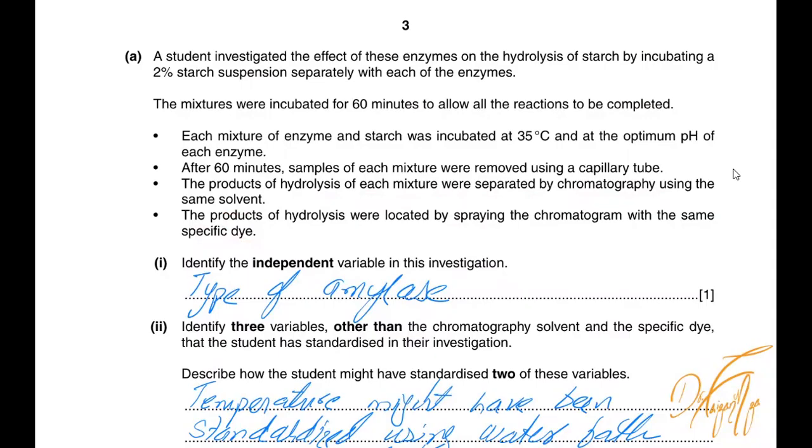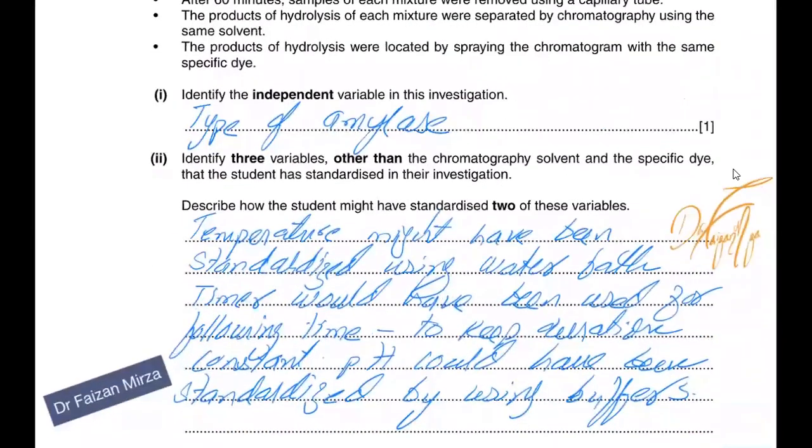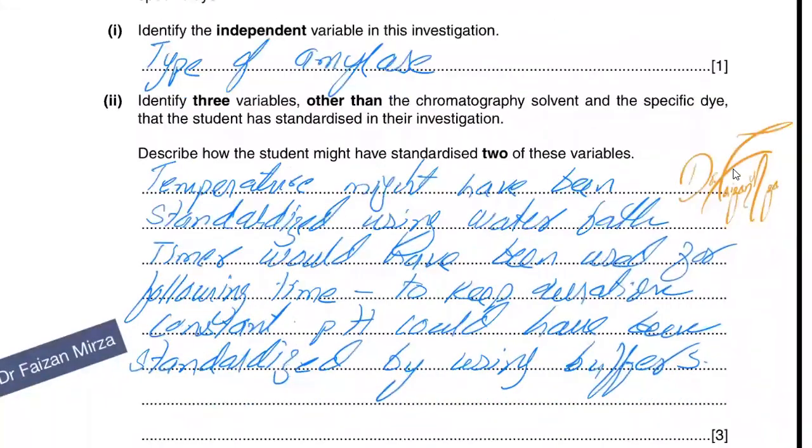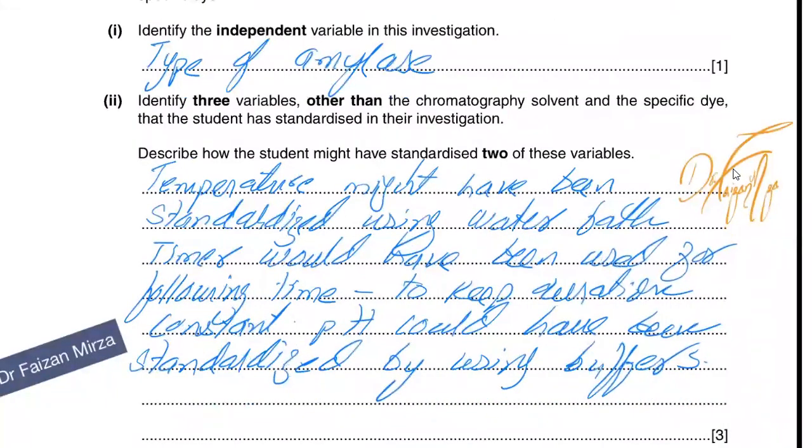Identify the independent variable in this investigation. So type of amylase because there's three types so it would be your cause here in the different type of product formation. Identify three variables other than the chromatography solvent and the specific dye that the student has standardized in this investigation. So if you just read through the information, describe how the student might have standardized two of these variables. So you have to state three and then mention how two of those could be standardized.